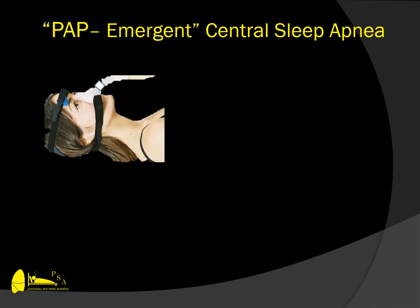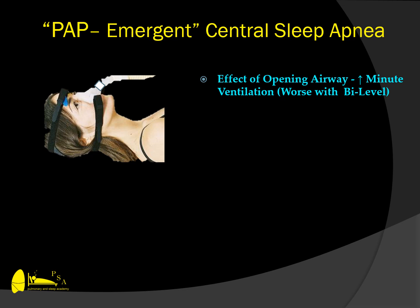Another common form of central sleep apnea seen in clinical practice is PAP-emergent central sleep apnea, also known as complex sleep apnea. This is a phenomenon where patients on PAP therapy will develop central apnea upon treating their obstructive apnea. This is explained by the fact that PAP therapy opens the airway, which generally increases minute ventilation and drives the PCO2 down below the apnea threshold — a CO2 overshoot. There is a conception among many clinicians that switching to bi-level therapy will resolve this central apnea, but in fact it often makes it worse depending on the settings, which may cause even more increased ventilation.